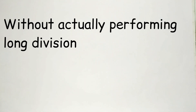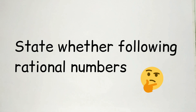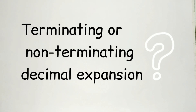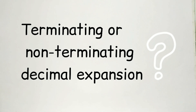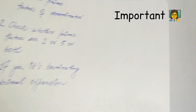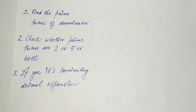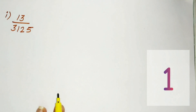Question number 1 says: without actually performing the long division, state whether the following rational numbers will have a terminating decimal expansion or a non-terminating repeating decimal expansion. Just remember these three steps and you can solve all the parts of question number 1. So let's do it.